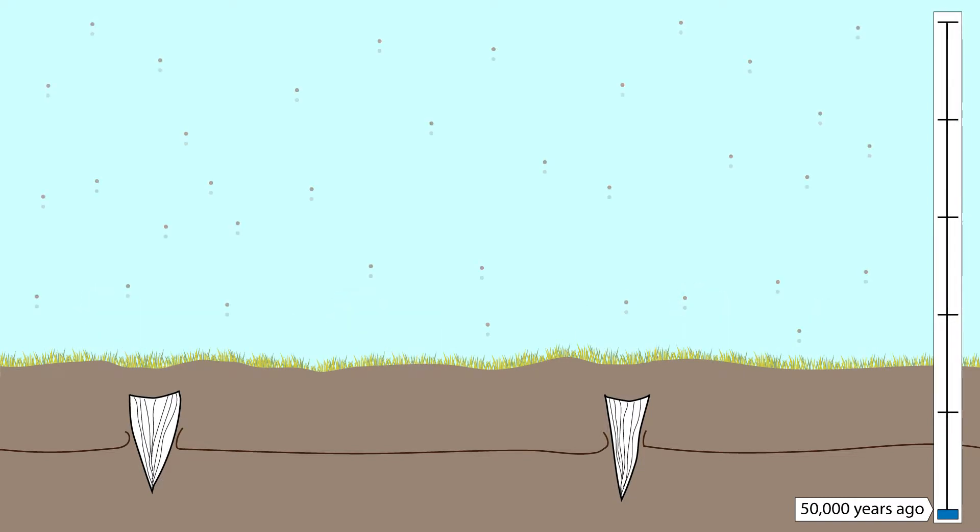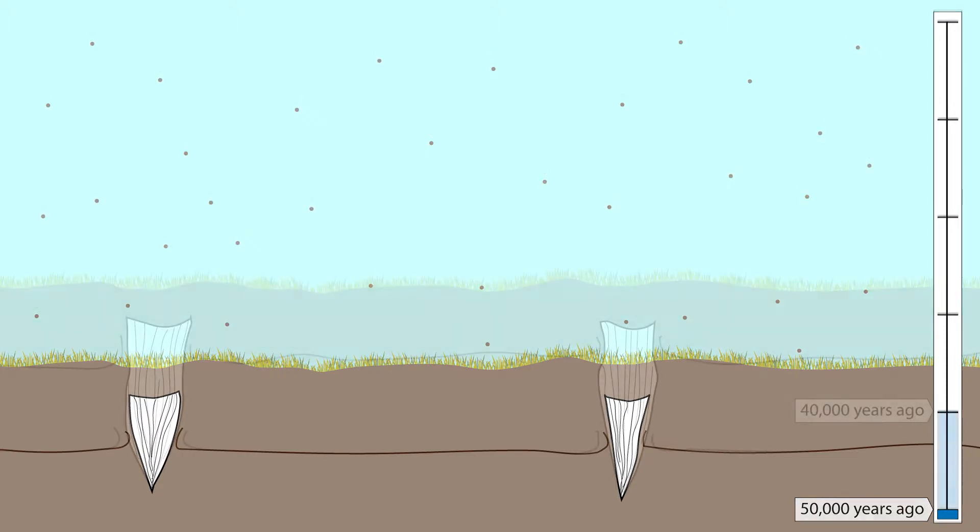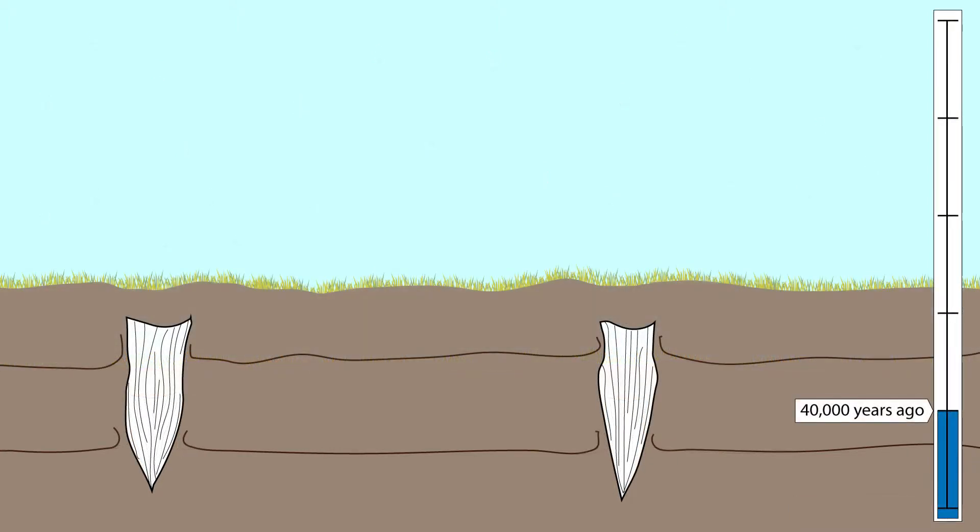The wind blew dust-like silt into the area covering the land. The ground surface slowly raised along with the permafrost.